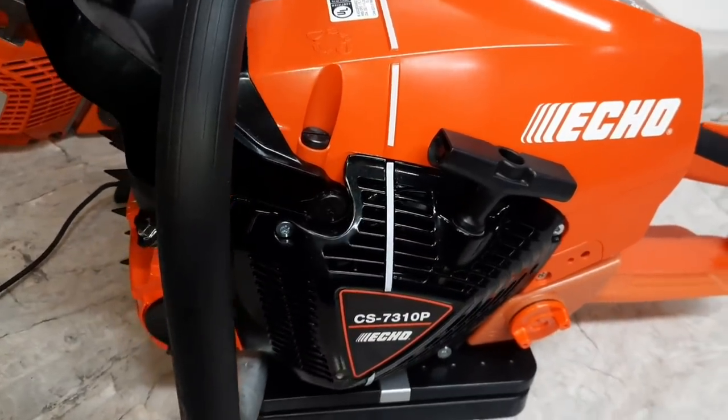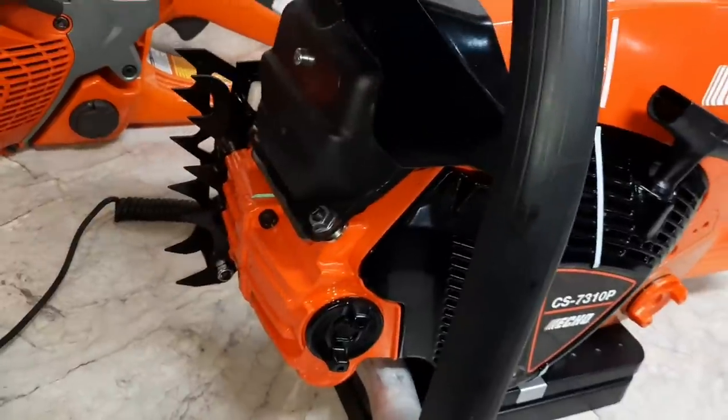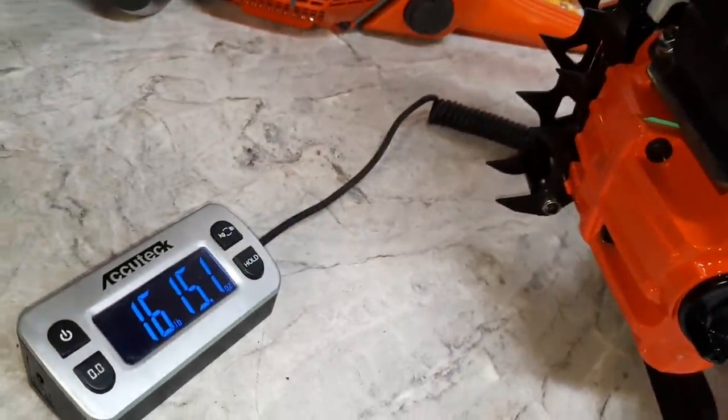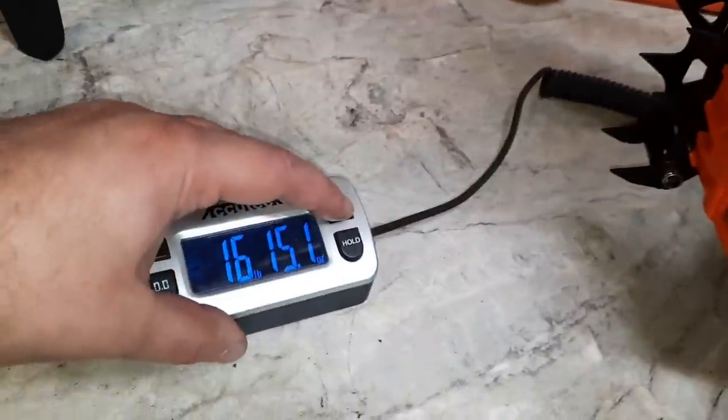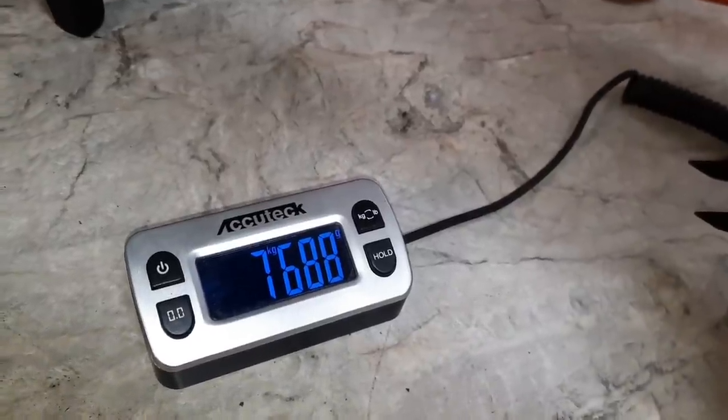Echo CS 7310. This has dual spikes. 16 pounds, 15.1 ounces. There's the metric.